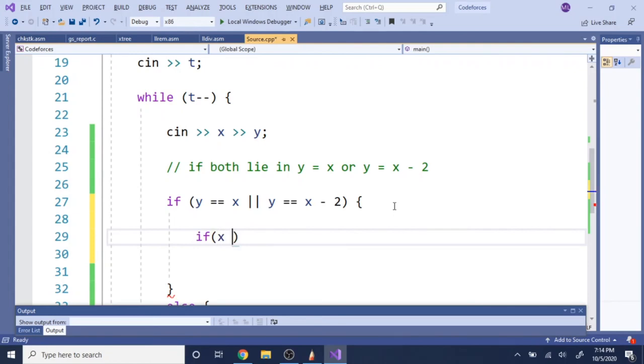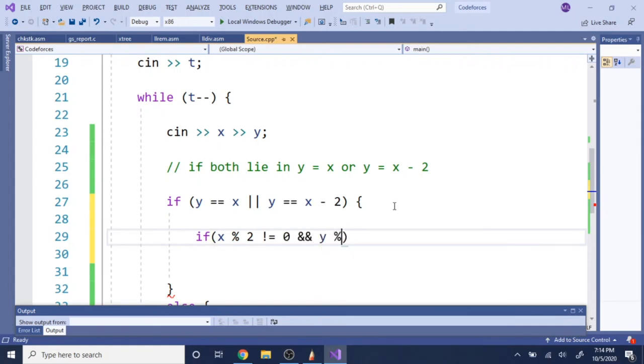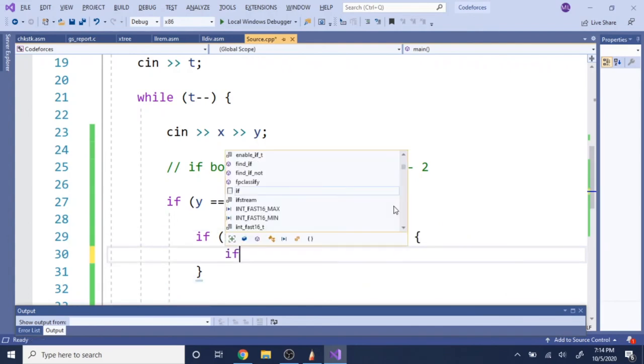So, if one is odd, so if x is odd, if x mod 2 is not equal to 0, and y mod 2 is not equal to 0. So, that means they're both odd. If they're both odd, you just print out x plus y minus 1, okay?